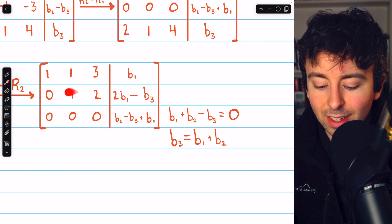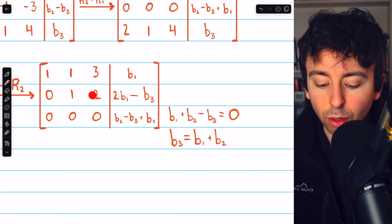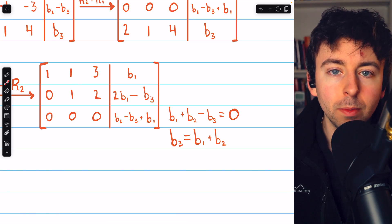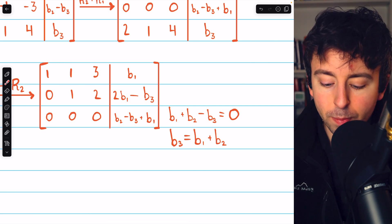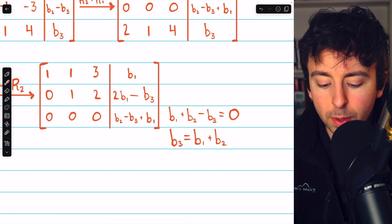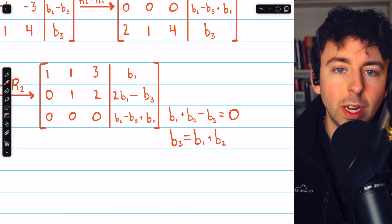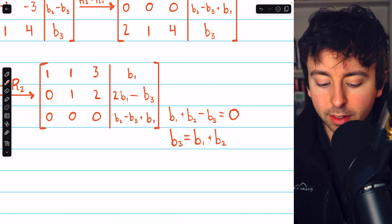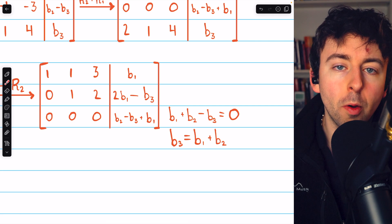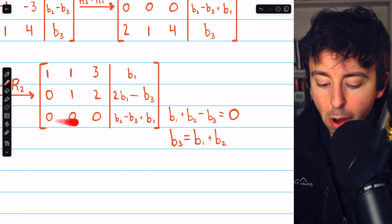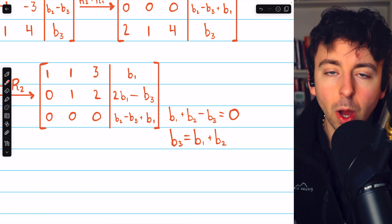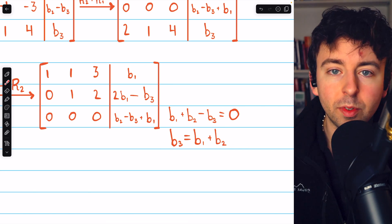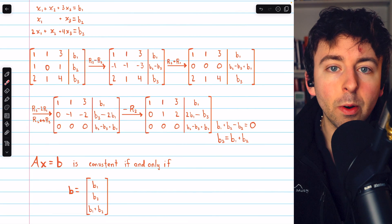For example, you can see in row 2 that x3 is actually going to be a free variable because there's not a leading one in column 3. So whatever b1 and b3 are, you'll be able to adjust x3 to create a solution. And from this, the value for x1 could be determined also. So it's only row 3, which has all zeros here, that's placing this restriction on the third component of our column vector b. And this gives us our solution.